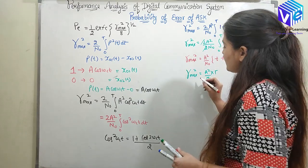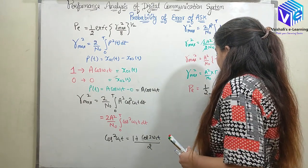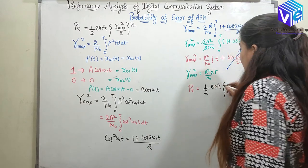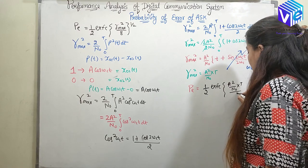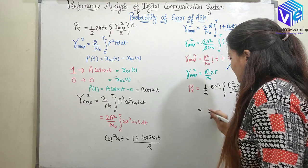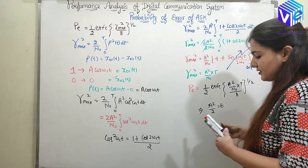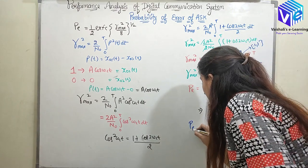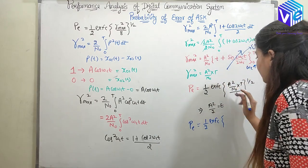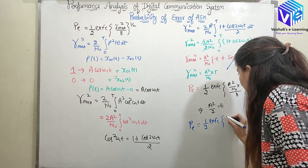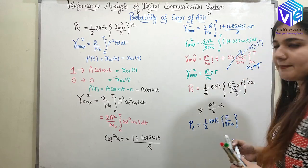Putting this value of gamma_max² into the probability of error formula: Pe = (1/2) erfc( (A²T / (8N₀))^(1/2) ). Since A²/2 = E (energy) and T = 1 bit interval, this simplifies to Pe = (1/2) erfc( (E / (4N₀))^(1/2) ). This is the probability of error of ASK.